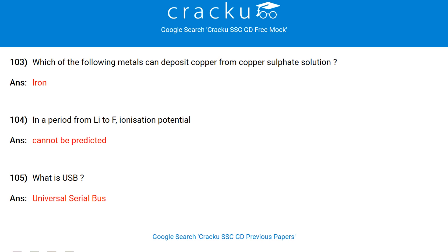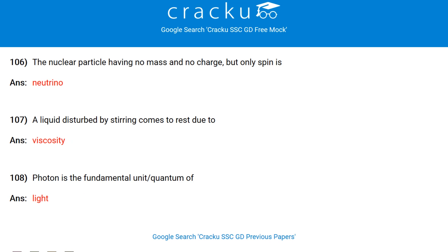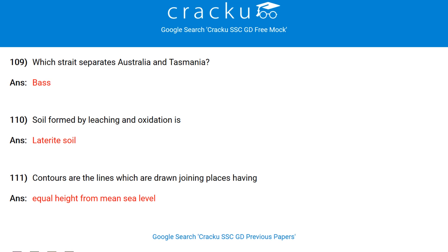What is USB? Universal Serial Bus. The nuclear particle having no mass and no charge but only spin is neutrino. A liquid disturbed by stirring comes to rest due to viscosity. Photon is the fundamental unit or quantum for light. Which strait separates Australia and Tasmania? Bass Strait. Soil formed by leaching and oxidation is laterite soil. Contours are lines drawn joining places having equal height from mean sea level.